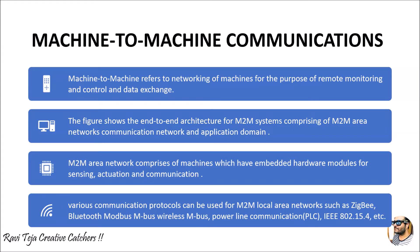We are going to see an architecture of end-to-end M2M systems. This architecture will show how machine to machine area network communications with respect to the application domain are used. Generally, machine to machine area networks will have machines embedded with hardware modules. These hardware modules can be like sensing sensors, actuators like motors, bulbs, LEDs, or displays, and also communication modules. Most communication protocols are used in these M2M local area networks, and for nearby distances between two machines, we generally consider it as a local area network.